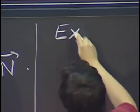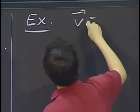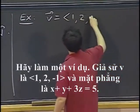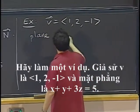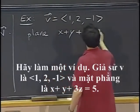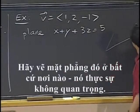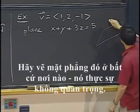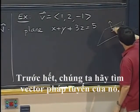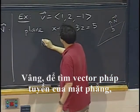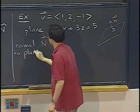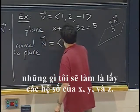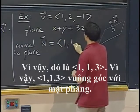OK, so let's do the example. Say v is 1, 2, negative 1, and the plane is x plus y plus 3z equals 5. Let's just draw that plane anywhere. It doesn't really matter. Let's first get a normal vector out of it. Well, to get a normal vector to the plane, what I will do is I will take the coefficients of x, y, and z. So, that's 1, 1, 3.